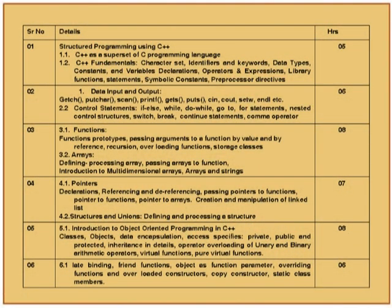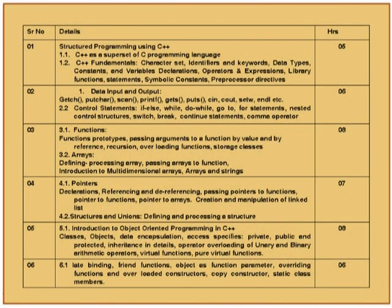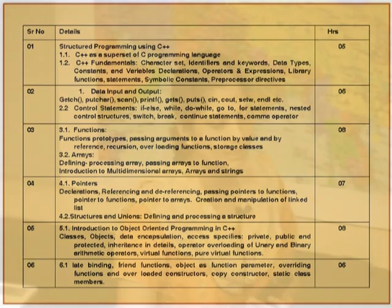Coming to the evaluation system: we have a theory examination of three hours for 100 marks, and term work of 25 marks, making a total of 125 marks for the subject. The syllabus has six modules. We start with structured programming using C++ and end with an introduction to object-oriented programming. We begin with simple programming fundamentals like character sets, identifiers, keywords, data types, then data input/output, control statements, functions, arrays, pointers, structures, unions, and finally two units on OOP including late binding and advanced topics.